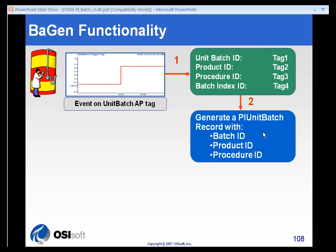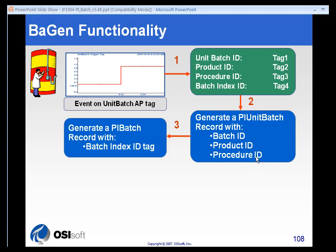We will then create a unit batch record in the batch database with batch ID, product ID, and procedure ID. And if there is a batch index tag, we'll associate this unit batch with that overall batch.